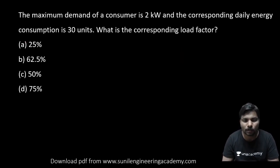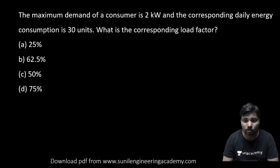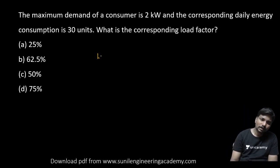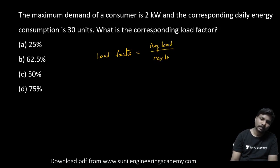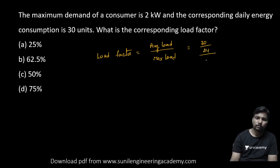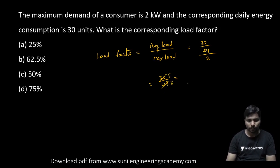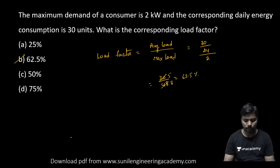Next: the maximum demand of a consumer is 2 kilowatt and the corresponding daily energy consumption is 30 units. What is the corresponding load factor? Load factor equals average load divided by maximum load. Average load equals units consumed divided by hours = 30 / 24. Maximum load is 2 kilowatt. So load factor = 30 / (24 × 2) = 30 / 48 = 5/8 = 0.625, that is 62.5%. The answer is option: 62.5%.